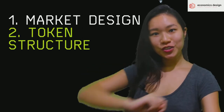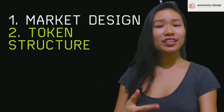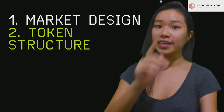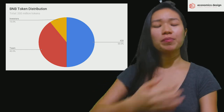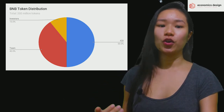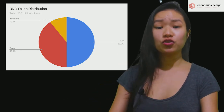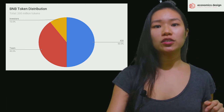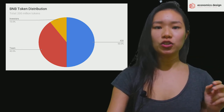Part 2: Token structure. Token structure is part of token design. In token design, you look into the token's monetary policy and valuation, which you're probably most interested in. For supply, there is a max supply of BNB tokens at 200 million. 100 million was distributed to the public via ICO, 80 million is allocated to the founding members, and 20 million is to investors.